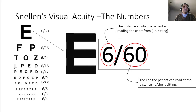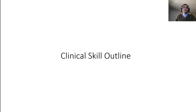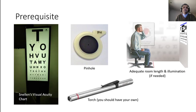Now let's go over the clinical skill outline. The video and your clerkship manual have the complete details. The prerequisites are a Snellen visual acuity chart, a pinhole, a room of adequate length and illumination. Many Snellen charts today are retro-illuminated to an ideal level, so room illumination is less critical. If a pinhole is not available, you can make one.